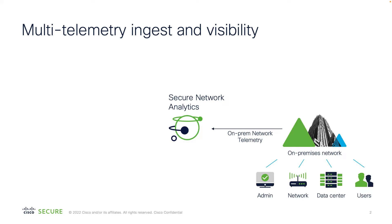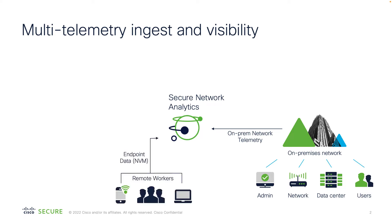Most probably you already know that SNA actually collects telemetry from on-prem network devices like routers, switches and firewalls in order to get and do analytics on this data. But we're adding a lot of new sources of telemetry like endpoint data coming from AnyConnect NVM where you can see the activity done by local workers, remote workers connected through VPN or even offline. Once they connect back again you can see their traffic and actual behavior on the network.